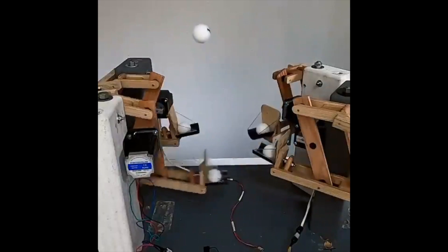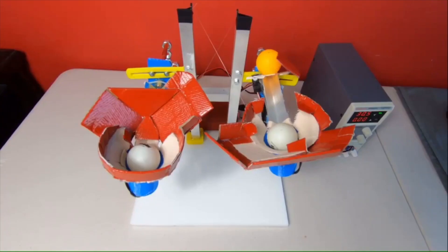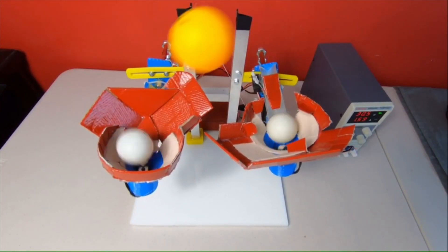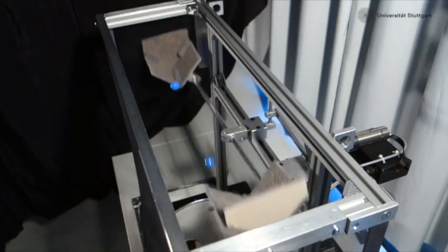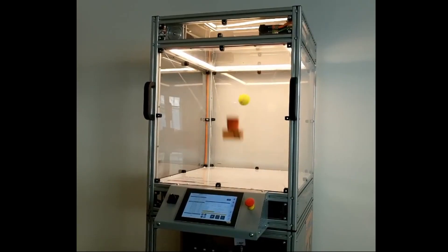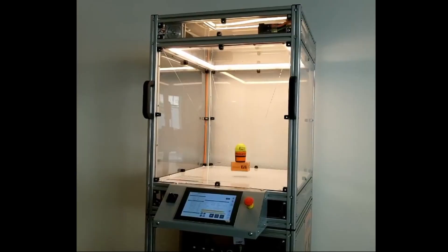Anyway, next time someone shares a juggling contraption on Instagram, watch carefully to see if it knows if it is juggling or not, or if it's just going through the motions. It's probably a juggling automaton, not a juggling robot, but that's not a bad thing.